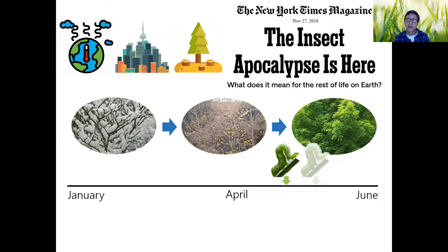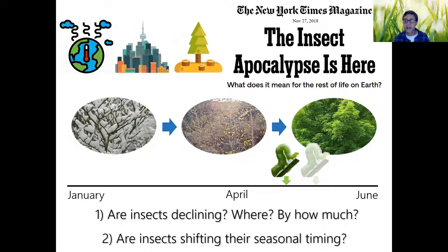If on average things are shifting earlier, what might this mean for birds wintering in Central or South America that don't realize that Maryland is early this year? Some bird species seem to be pretty good at adjusting the timing of migration — in a warmer, earlier green-up year, they're actually coming earlier. But some species seem less sensitive to that change, and those are the ones that might be in trouble. So are insects declining? Are insects shifting their seasonal timing, and if so by how much? Those are the main science questions that motivated creating this project.